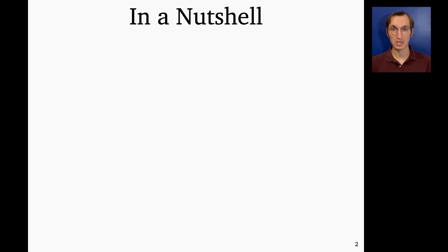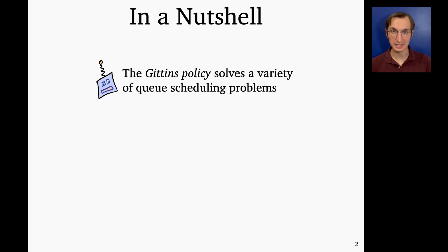So here's what this talk is about in a nutshell. The Gittins policy is a scheduling algorithm, in this case for an M/G/1 queue, that solves a wide variety of scheduling problems in that queue. So for example, it's going to help minimize mean response time and other variations on that theme.